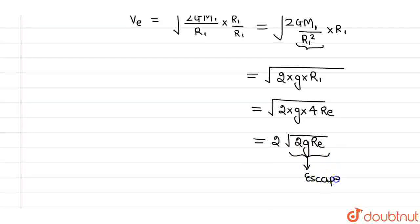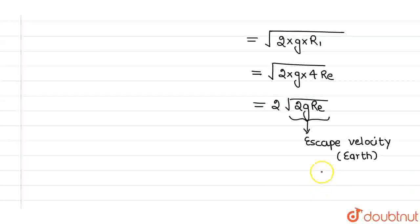This is escape velocity for any particle on the Earth, so I can say that this is escape velocity from Earth. And we know that its value is nothing but 11.2 km per second for this particular term.